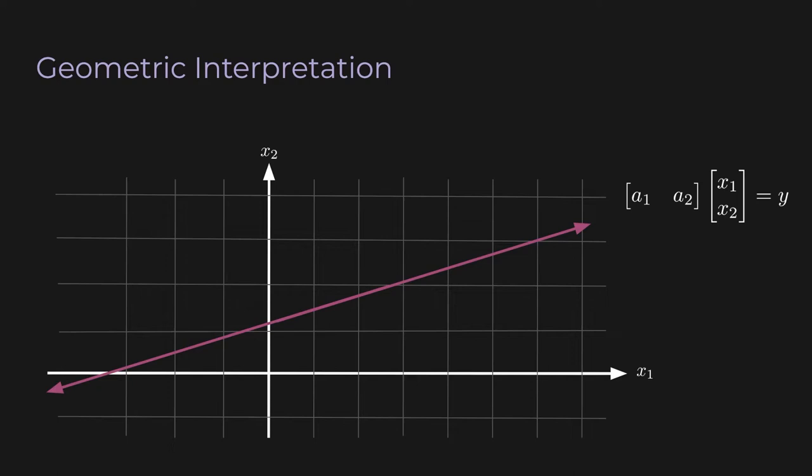This pink line represents all the x's — the x1, x2's — that can solve the equation Ax equals y. Note that this is a line; we have infinitely many solutions. You pick any point on this line, it's going to satisfy this equation. This type of set is actually called an affine subspace. A subspace is defined by two properties: scalar multiplication and vector addition. If you have some vector in the set and you scale it, that scaled vector will still be in the set. And if you have two vectors in the set and add them, you get a third vector still in the set.